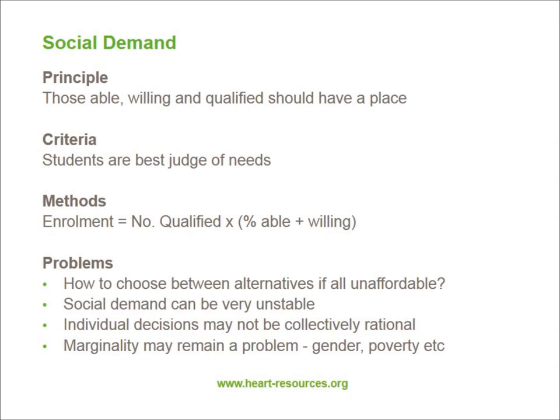There are some problems with this kind of planning. The first is how to choose between alternatives if all of them are not affordable. If the characteristics of demand generate applications to attend different kinds of institutions and the national budget isn't sufficient to accommodate all these wants, a decision has to be made to provide for some and not for others. Social demand can also be very unstable. In OECD countries, when unemployment is high and the opportunity costs of attending further education are low, many more people stay in school. When the opposite is true, you can see a rapid change in patterns of demand.